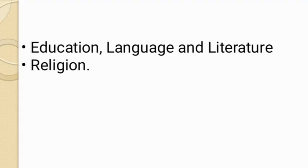Education, language, and literature: temples became centers for learning arts, culture, and literary activity. Subjects like astronomy, grammar, medicine, and mathematics were taught in schools associated with temples. Under the Chola rulers, literature was created in Dravidian languages such as Tamil, Telugu, and Kannada. The poet Kamban translated the Sanskrit epic Ramayana into Tamil in the 9th century.